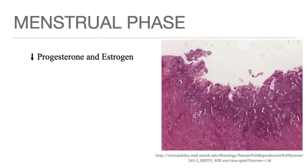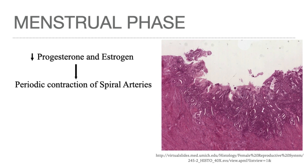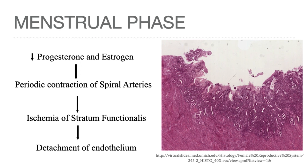In the menstrual phase, when an ovum is not fertilized, the corpus luteum degenerates, resulting in a drop of progesterone and estrogen levels. This leads to periodic contraction of the spiral arteries, causing ischemia of the stratum functionalis layer. This layer degenerates, followed by shedding of clumps of necrotic endometrium, and by day 3 or 4 of menses the entire functionalis layer sloughs off. Blood loss is normally about 35 ml. The basalis remains intact and soon begins to regenerate a new functionalis layer.